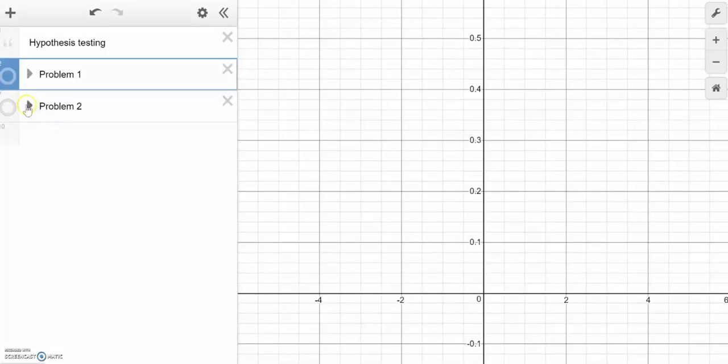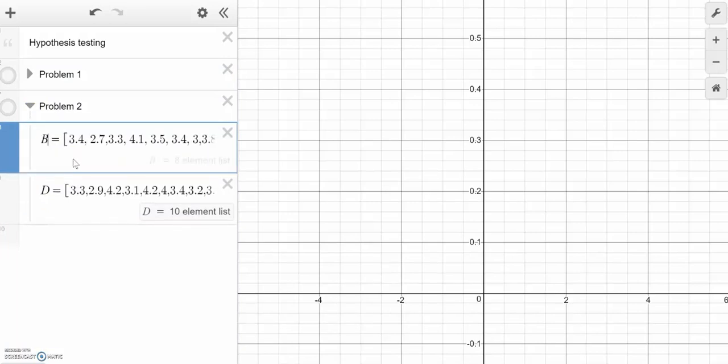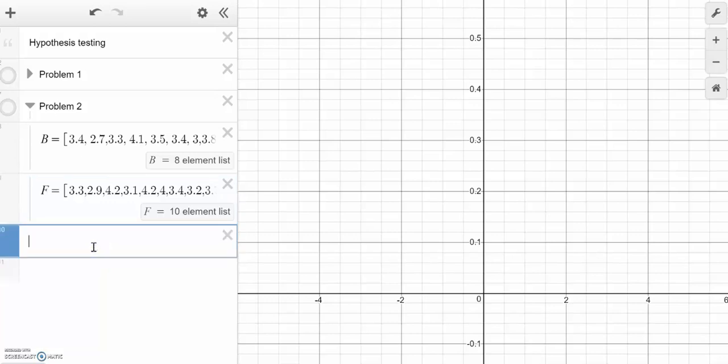So up top here, I have my null hypothesis that these two means are equal to each other versus the alternate that Fish Friends is greater than Byrite or alternative that Byrite is less than Fish Friends. So let's go back to Desmos again. I've put these both in as lists. I probably could have called these B and F. Let's call them B and F.